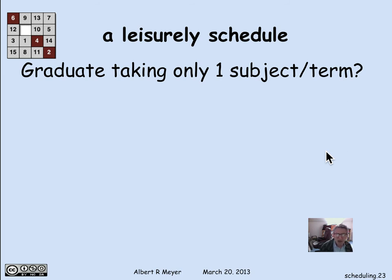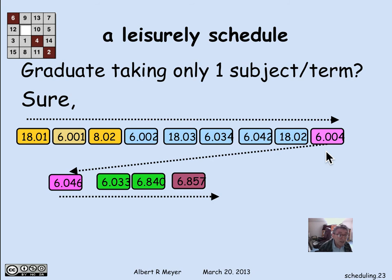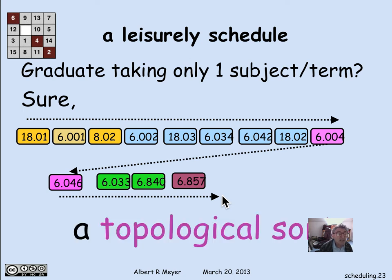Now let's consider other scheduling patterns. We found the greedy schedule, but suppose you're constrained to one subject per term. You can still do it: just schedule all minimal elements first in any order, one, two, three, then the five second-level minimal elements, then the third level, and so on. It's perfectly possible to modify the greedy schedule into a one-subject-per-term schedule where you always take a subject only after satisfying all its indirect and direct prerequisites. This is called a topological sort — sorting elements in order of increasing 'size,' with 18.01 as smallest and 6.857 as largest.